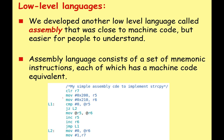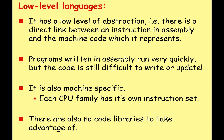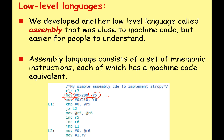For example, one of these instructions shows we're moving data into register number five — straight away a bit easier to understand than ones and zeros, but still quite difficult. Assembly has a low level of abstraction: there is a direct link between the instructions in assembly and the machine code it represents — a one-to-one instruction relationship. So each line of assembly would translate into one line of machine code.